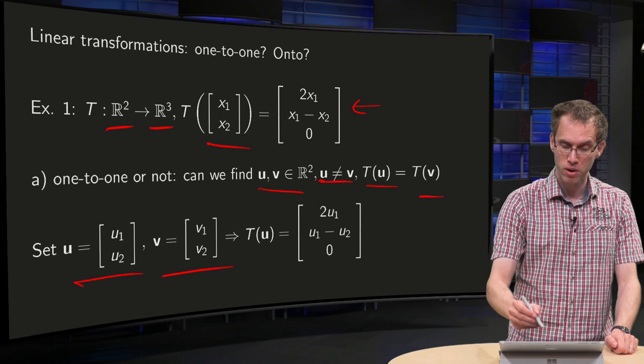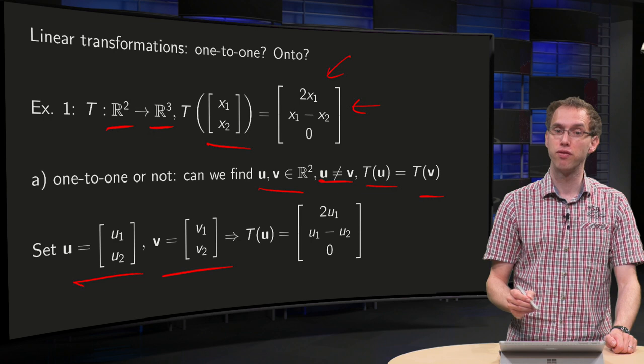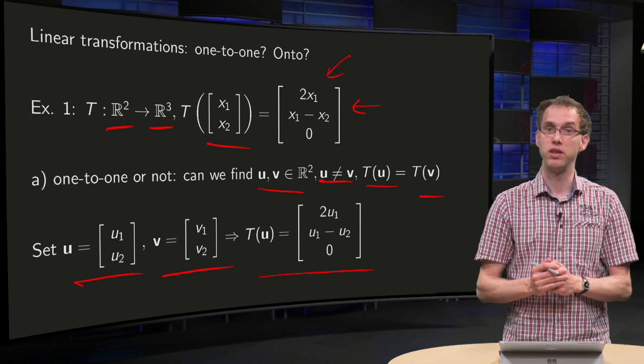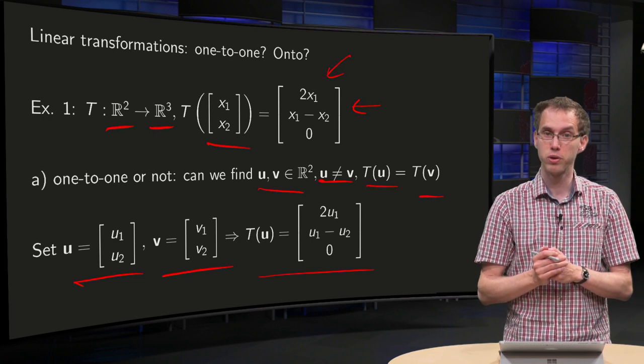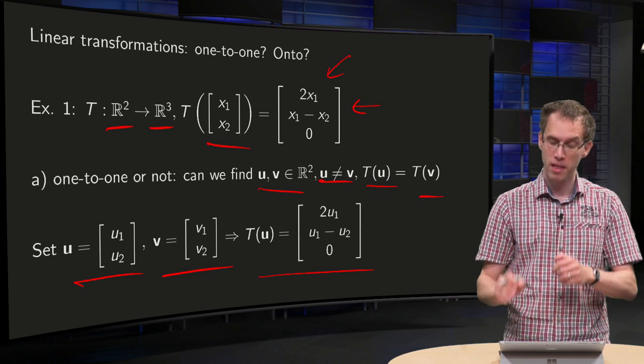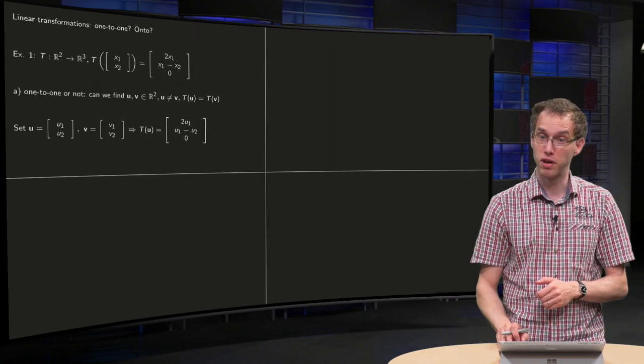How do we find T(u)? Just plug it in the formula. That gives you T(u): 2u₁, u₁ minus u₂, 0. And T(v) similarly, of course.